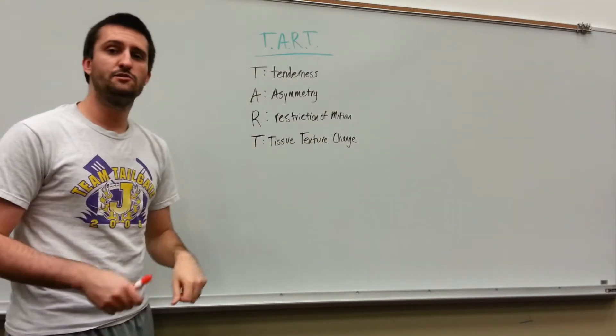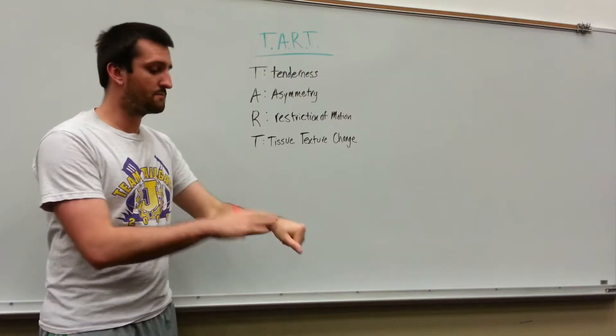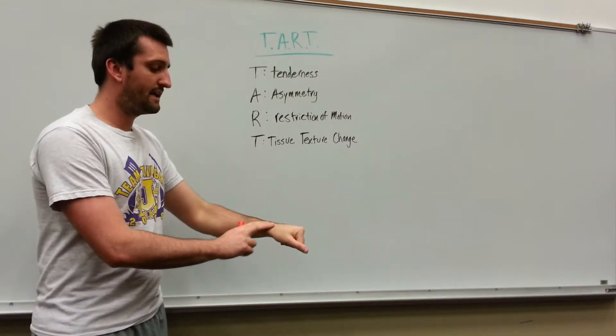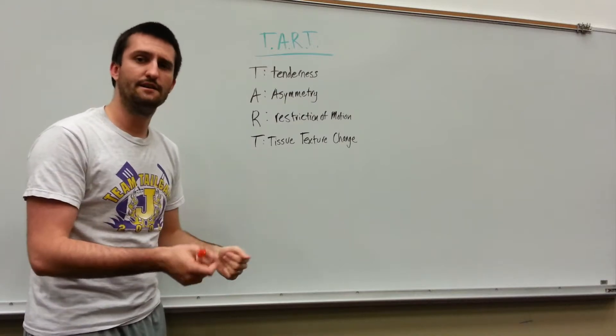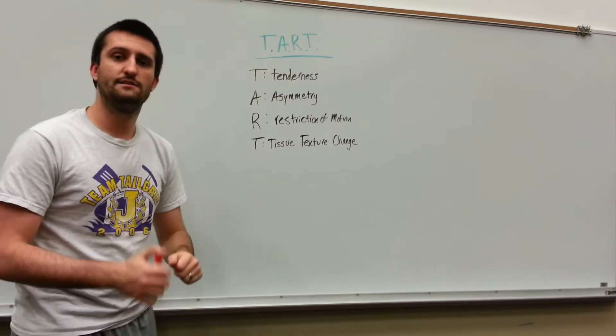A stands for asymmetry. We're going to compare bilaterally. So I'm going to be feeling for asymmetry between both of my wrists. Do I feel anything different? If I do, it could indicate a somatic dysfunction.